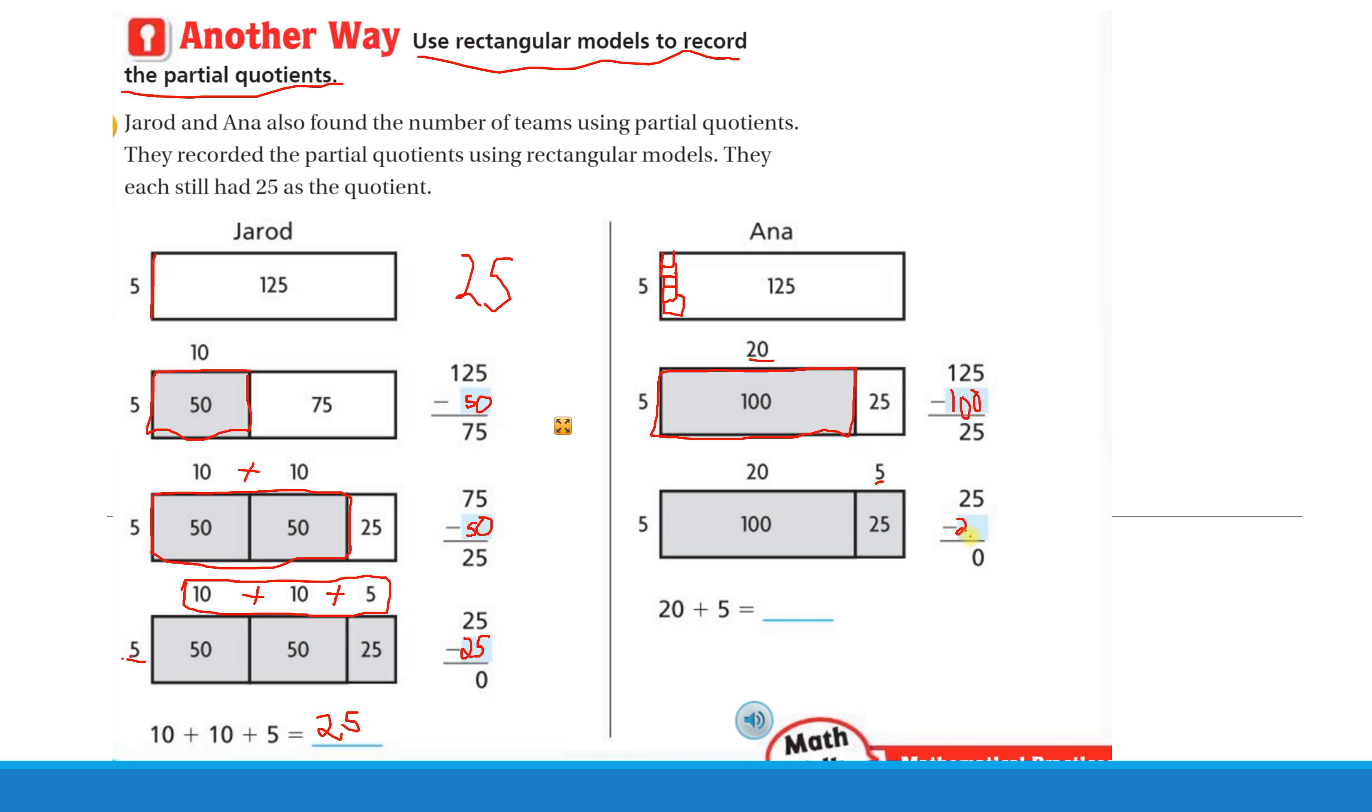So see, they both got the same answer. Anna just jumped a little further ahead. She said, hey, I know 20 times 5, because I know 20 is the same thing as two 10's. 2 times 5 is 10. Add my 10. That's 100. So I know if I'm dividing 125 by 5, I can jump all the way up here and cut out a step. Now, that's perfectly okay. Either way is fine to do. Thank you again for watching.